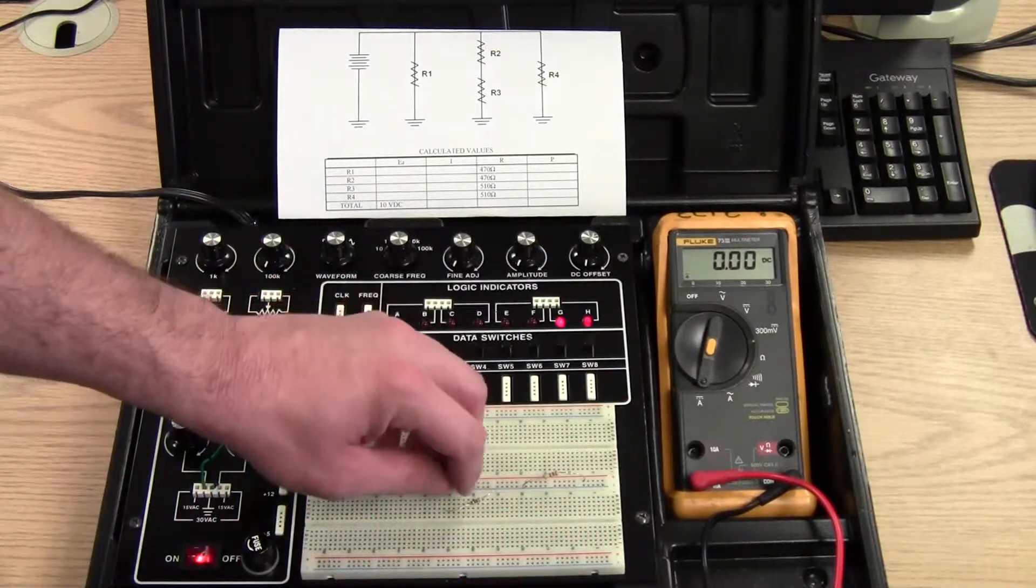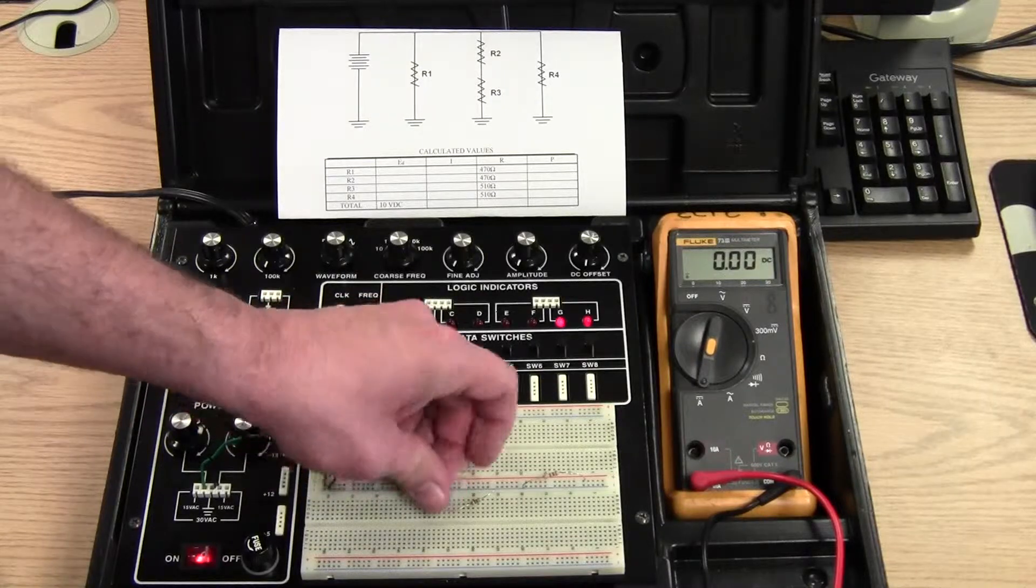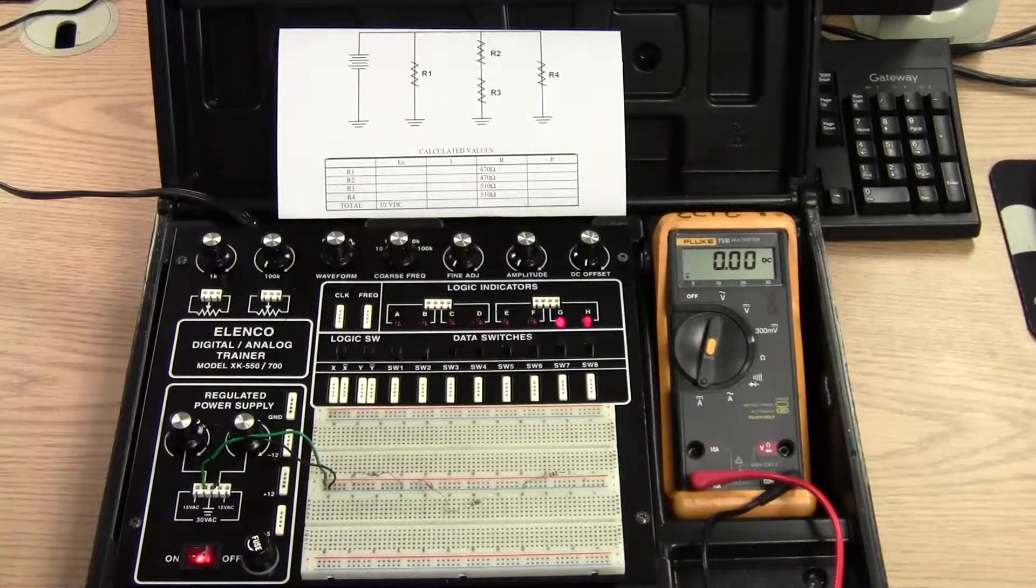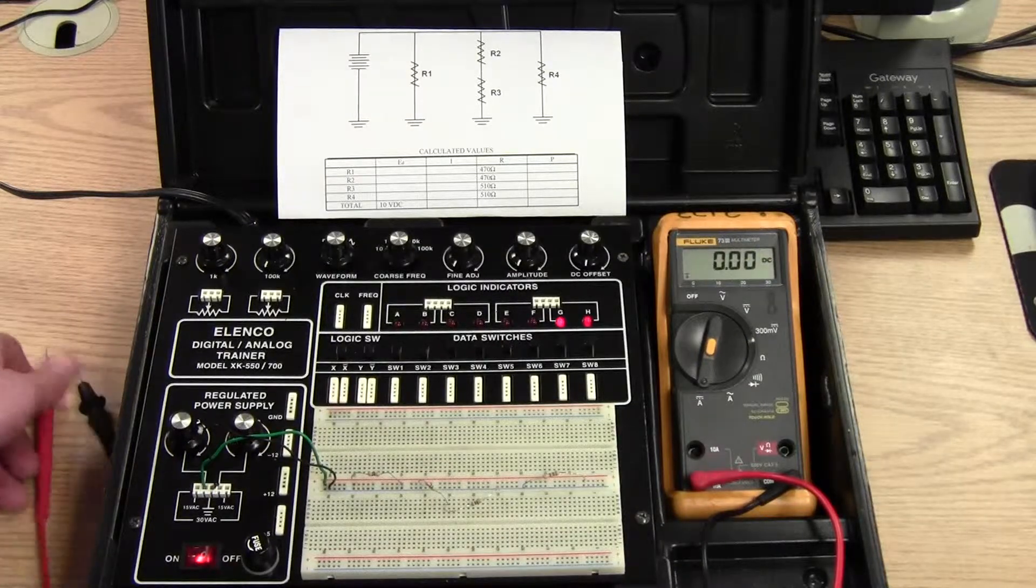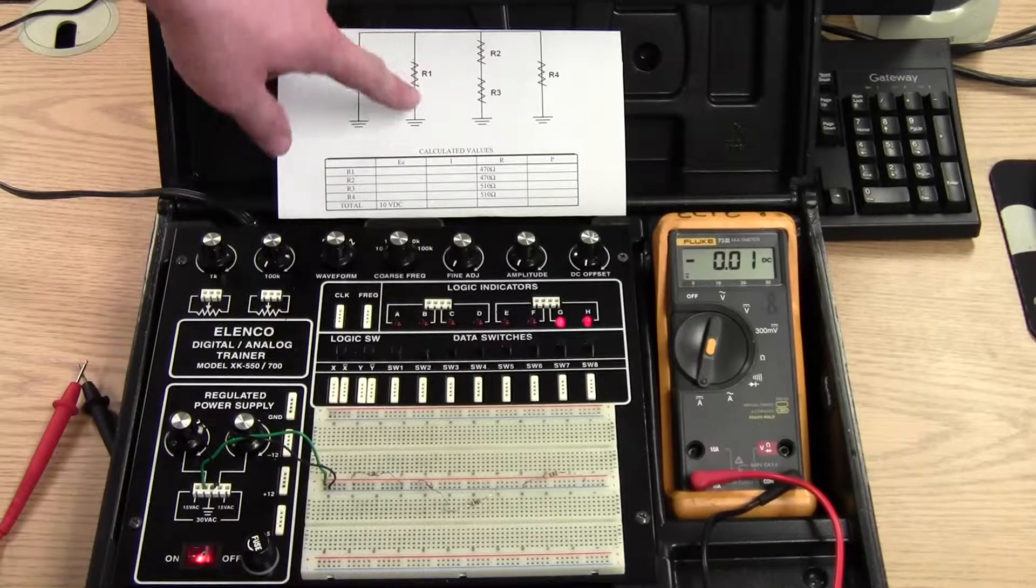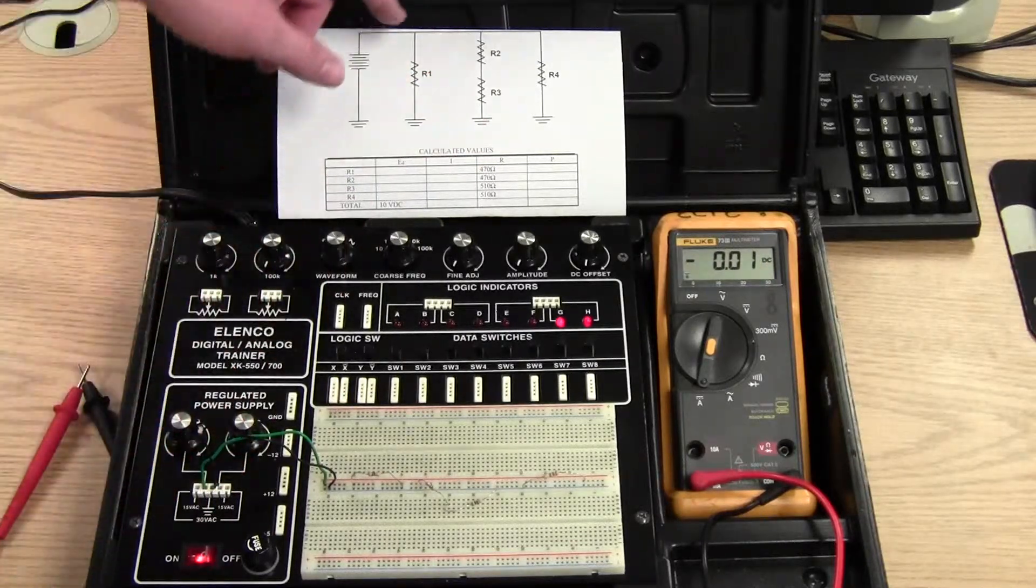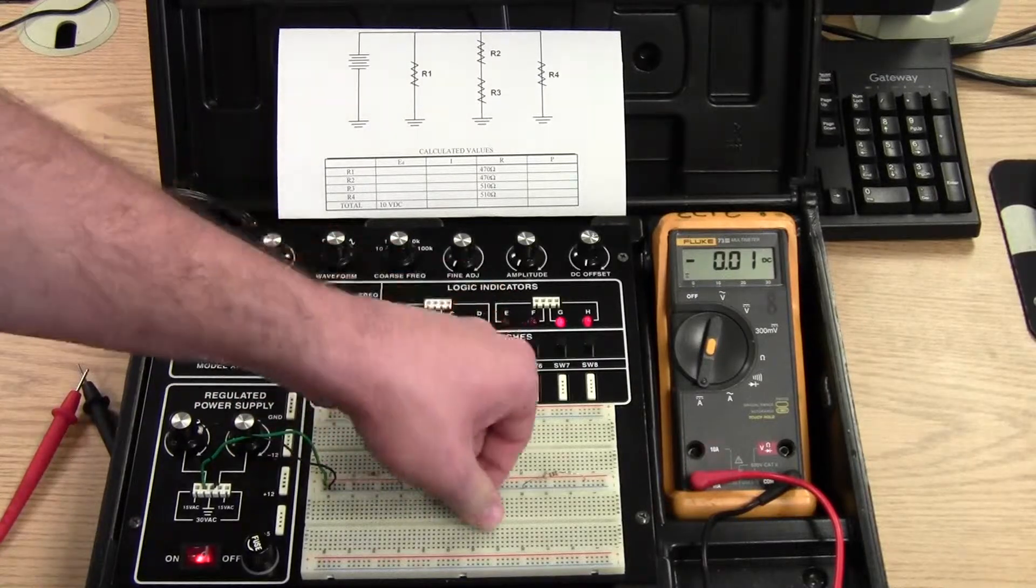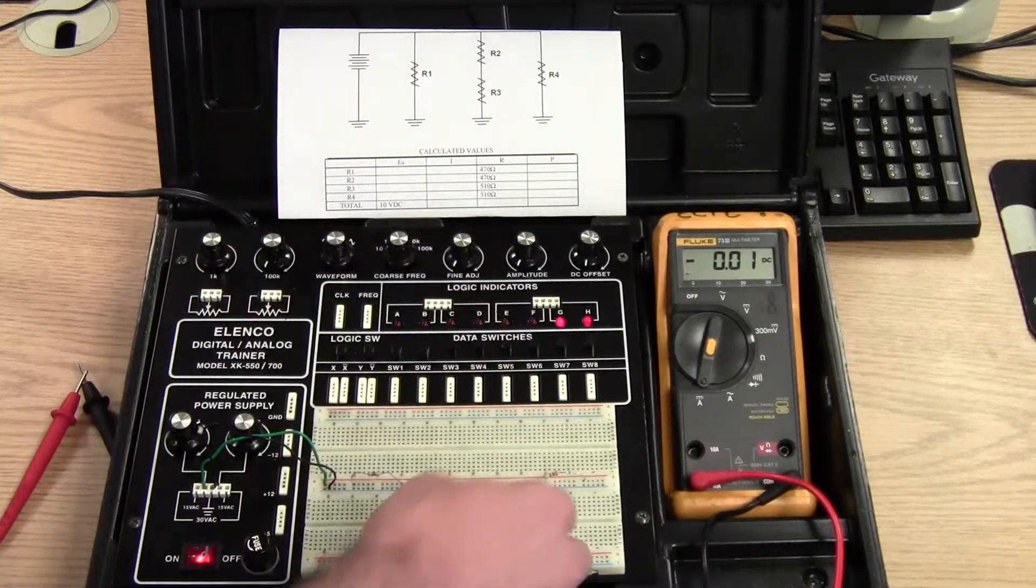Pull that out. Put it back together. Now the current for R3. Since R2 and R3 are in series, you use your series circuit current rule. And that states that current through a series circuit is the same everywhere. So the current that I measured through R2 is going to be the same through R3.